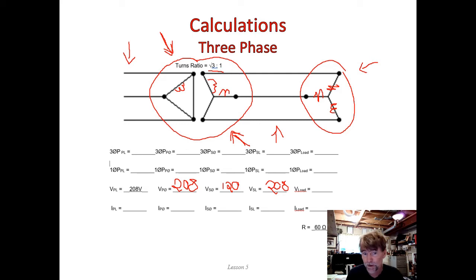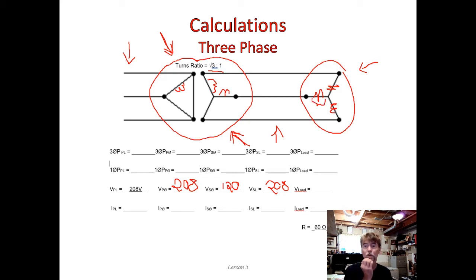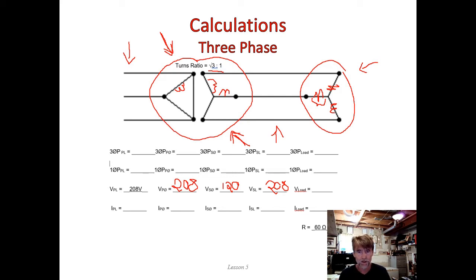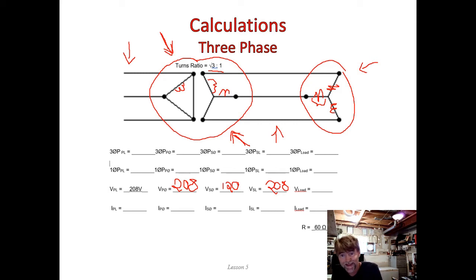Finally we need the voltage at the load. These are phase values — what is the potential difference across one of those resistors connected in Y? Going from the secondary line into the phase in a Y connection: Y is like series, current stays the same, voltage changes by root 3. We went up by root 3 from phase to line, so going back from line into the load phase it goes back down. The potential difference across each resistor is 120 volts.